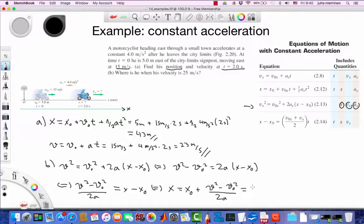So x becomes the initial position plus (v² - v₀²)/(2a). Initial position is 5 meters. Then v² is the current velocity squared minus initial velocity squared, divided by 2 times the acceleration, which is 4 meters per second squared. And we get 55 meters.